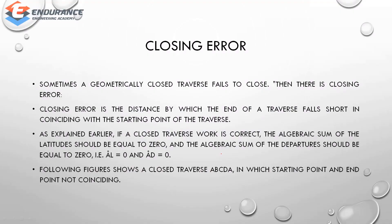The first topic is closing error. So what is closing error? For example, if you form a traverse — say a pentagon — it could be open or closed. Sometimes a geometrically closed traverse fails to close, and that is the closing error. Closing error means the error at the starting point where the traverse fails to return exactly to its origin.